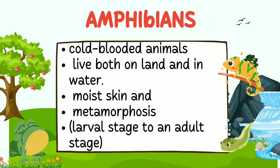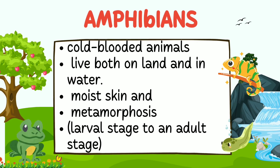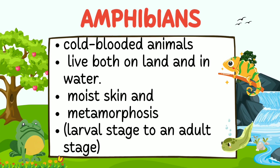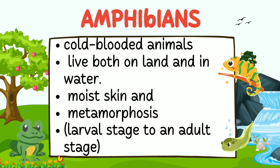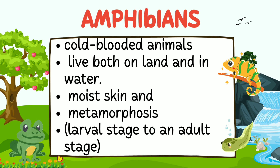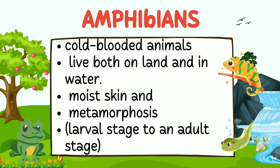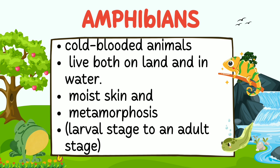Amphibians are cold-blooded animals that can live both on land and in water. They have moist skin and typically undergo metamorphosis from a larval stage to an adult stage.